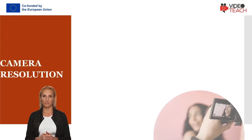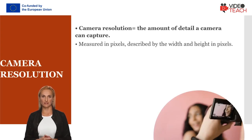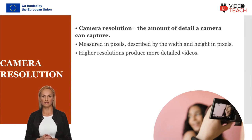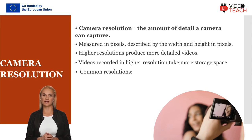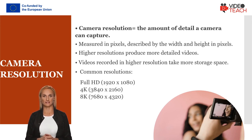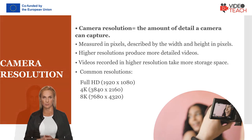Camera resolution refers to the amount of detail a camera can capture. It is measured in pixels, described by the width and height of an image in pixels. Higher resolutions produce more detailed videos; however, videos recorded in higher resolution take more storage space. The most common resolutions today include Full HD 1920x1080, 4K 3840x2160, and 8K 7680x4320.